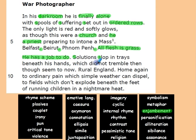'Which did not tremble then, though seem to now.' Those hands did not tremble then because he had a job to do — he had to take the photos. If his hands had trembled, the photos would have been blurry. He controlled himself at that time, he was calm. But now, when he actually sees the photos, his hands start trembling. There is trauma — when he sees the pictures he gets really scared.